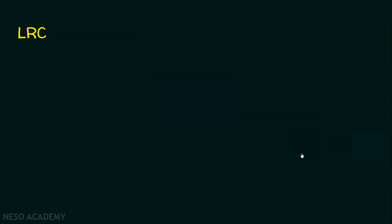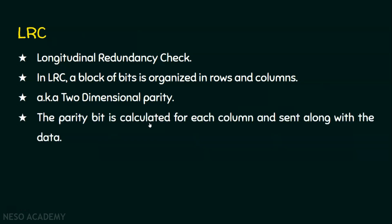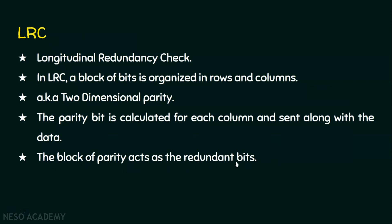In VRC, the parity bit is appended to every data block. Whereas in LRC, a block of data bits is organized in rows and columns. Since the block of bits are organized in rows and columns, we also call LRC as the two-dimensional parity. The parity bit is calculated for each column and sent along with the data. This block of parity acts as the redundant bits, which are sent along with the data so the receiver can detect errors in the transmission.